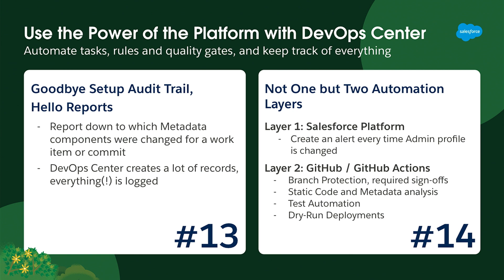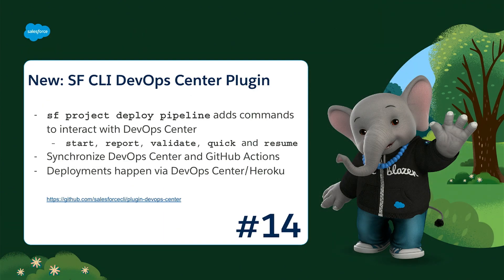The second layer of automation is GitHub Actions. If you want to do test deployments or end-to-end testing with browser automation tests, GitHub Actions is your friend. What's even better is GitHub Actions plus DevOps Center — because with the release last week of version 6.0, there are now CLI commands that allow you to harmonize GitHub Actions and DevOps Center. You can do automated checks with PMD and other Node tooling, and only if those checks turn green will there be an automatic promotion to the next stage. Note that the deployment still happens via Heroku, so metadata transformations are not there yet.